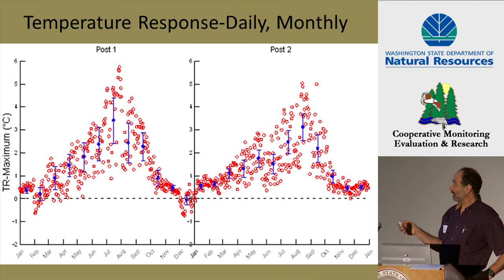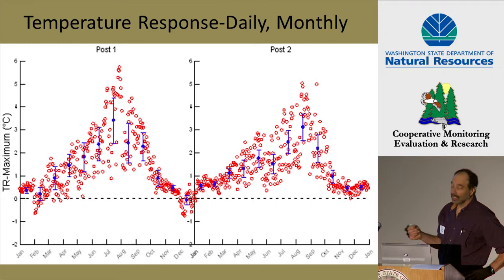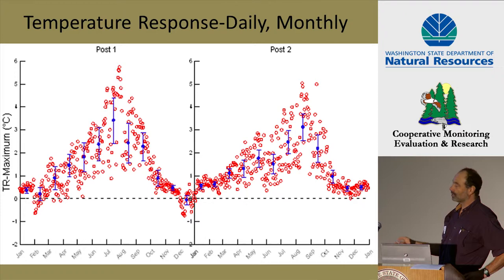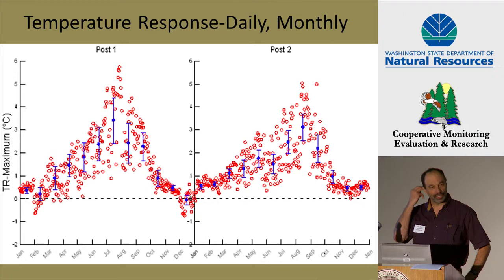If we plot the daily temperature responses for just the post-harvest years at one particular zero percent site, the red values are daily responses plotted by calendar month, and the blue values are means by month with 95% confidence intervals. If the confidence intervals do not cross the zero dashed line, that's a statistically significant response. The pattern is clear: very little difference in wintertime, increases to a maximum in July and August, and back to little difference in winter. The daily temperature response is most pronounced in the hot summer months, which is pretty much what you'd expect.